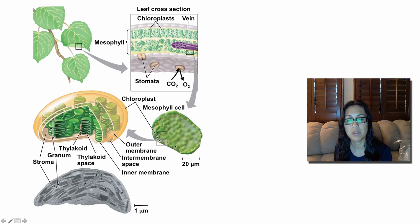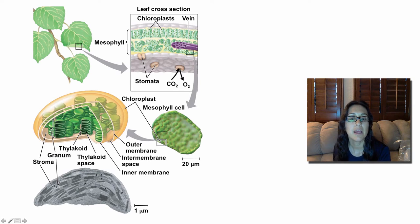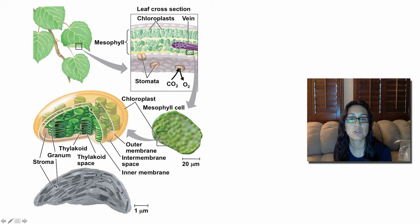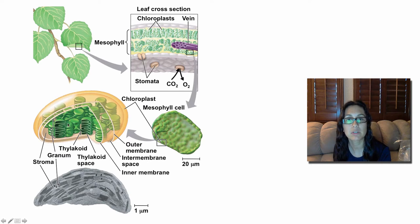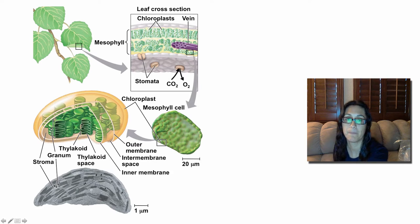When you zoom in on a mesophyll cell, you can see little circles — those represent our chloroplasts. Within the chloroplast, the key parts to remember are the thylakoids and your stroma. The stroma and the thylakoids are the key parts where the two stages of photosynthesis are going to occur.